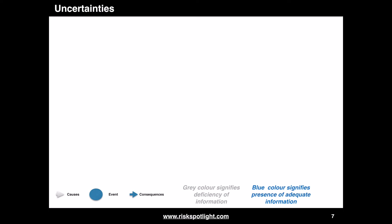These three aspects are represented by three symbols listed on the screen. Gray color for a symbol represents deficiency or lack of information about that aspect, and blue color represents presence of adequate information about that aspect. The meaning of these symbols and colors will apply to all the following examples.